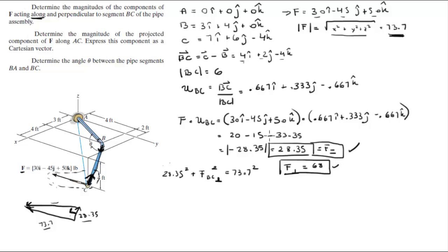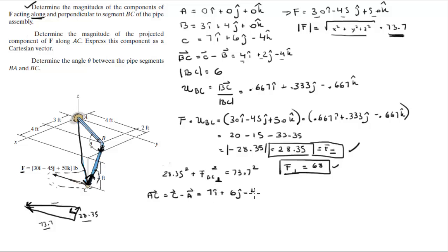For the second part, they want you to find the magnitude of the projected component along AC. We're going to use vector AC. The vector AC can be found by doing position vector C minus position vector A, which comes out to be 7i + 6j − 4k. The magnitude of AC, found with the same formula using these three values, comes out to be 10.05.